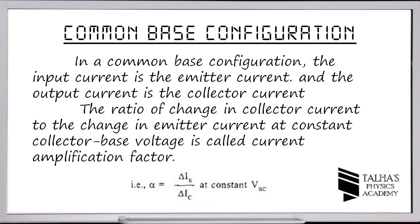In the common base configuration, the input current is always the emitter current and the output current is the collector current. The ratio of change in collector current to the change in emitter current at constant collector-base voltage is called the current amplification factor, denoted by alpha (α).